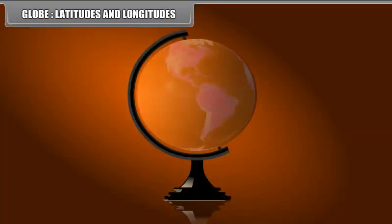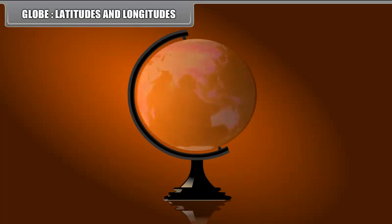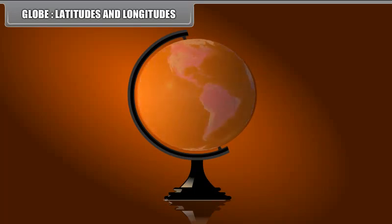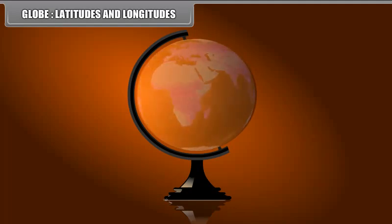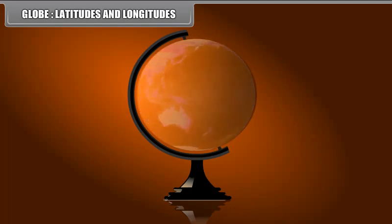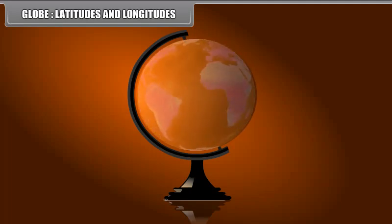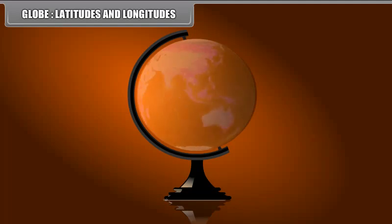Globe, Latitudes and Longitudes. It is believed that the earth is spherical in shape. The most suitable way of representing the earth as a whole is by a globe. A globe is a model of the earth on a small size. The globe is mounted on an axis so that it can rotate freely.